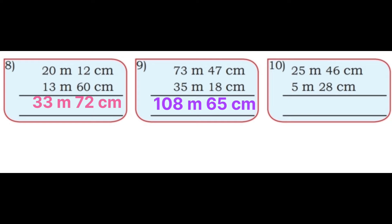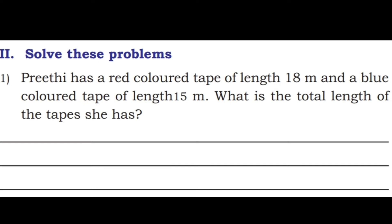Tenth: 25 m 46 cm + 5 m 28 cm. 6 + 8 = 14, write 4 carry 1; 1 + 4 = 5; 5 + 2 = 7; 5 + 5 = 10, write 0 carry 1; 1 + 2 = 3. Answer: 30 meters 74 centimeters. Second main — Solve these problems.